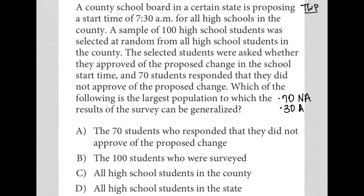So instead, what we're going to do is randomly choose a subset of this larger group, and we are hopeful that the information we get from that subset will give us information about the group as a whole. It saves us time and resources, and we still get the same information we would have gotten by asking every single person.